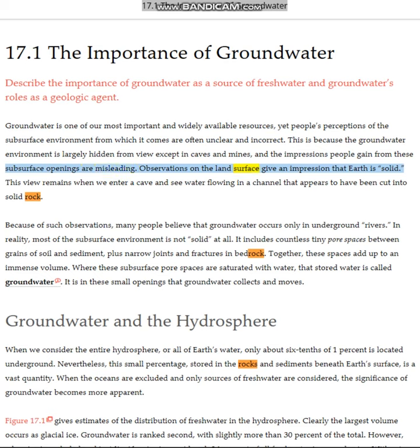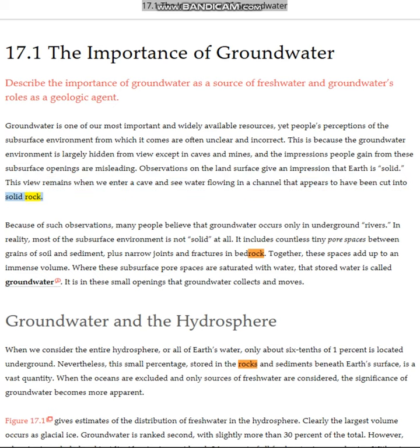Observations on the land's surface give an impression that Earth is solid. This view remains when we enter a cave and see water flowing in a channel that appears to have been cut into solid rock. Because of such observations, many people believe that groundwater occurs only in underground rivers.